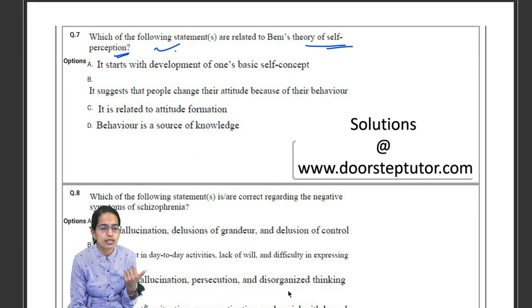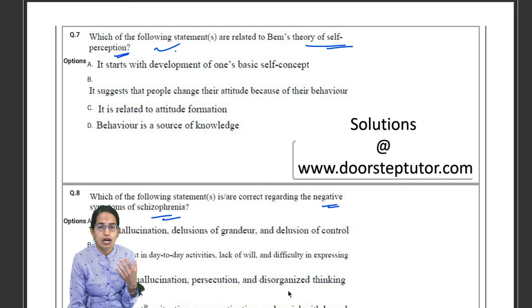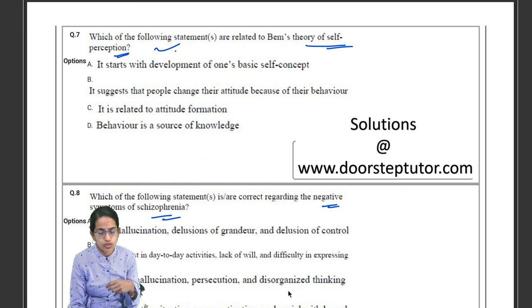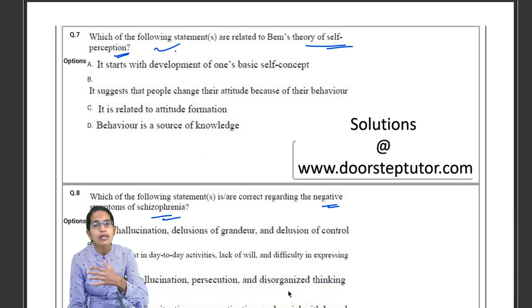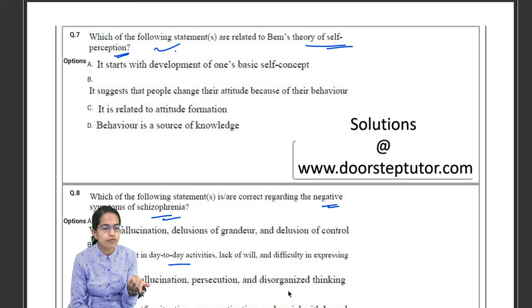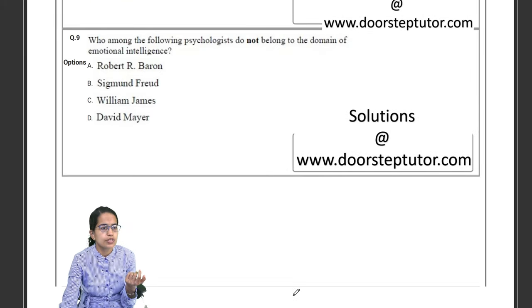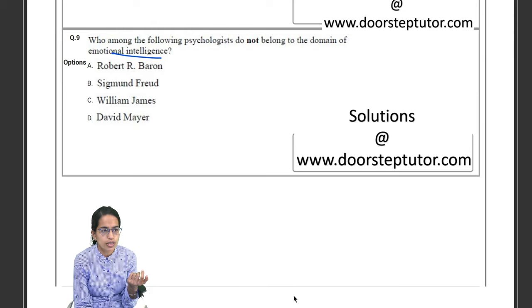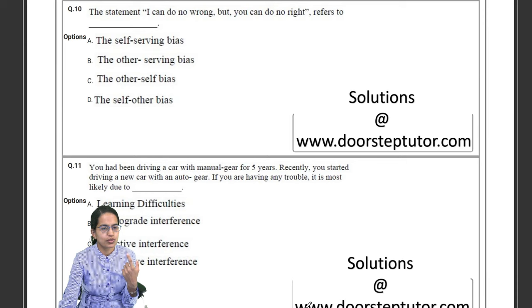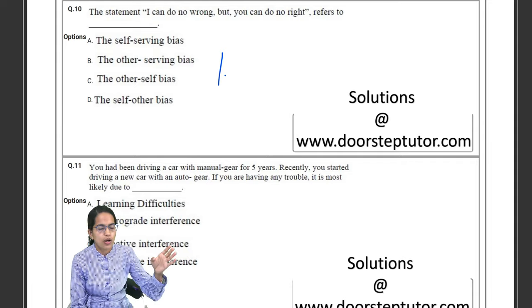Schizophrenia - the positive and the negative symptoms. Now positive symptoms are those which are the inappropriate symptoms which are actually visible, so delusions, hallucinations. Negative symptoms should be there but are lacking, so loss of interest, lack of will are those kind of examples. Then which of the following do not belong to the domain of emotional intelligence. Again, intelligence is an important question.